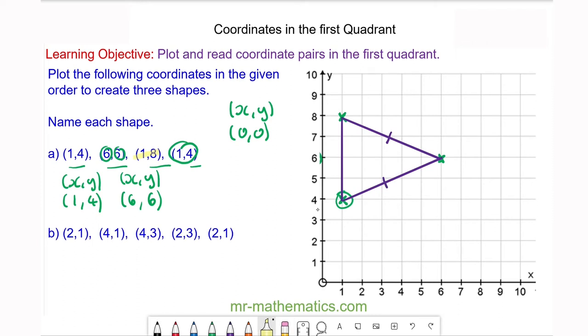Do you want to try and plot these coordinate pairs and then identify and name the shape? You can pause the video and resume it when you're ready. So to begin with, we have the coordinate (2,1), when x is 2 and y is 1, which goes here.